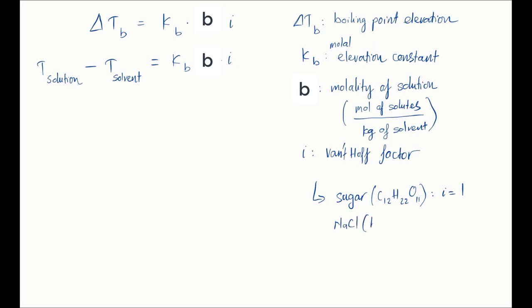Sodium chloride, however, when dissolved in water gets split into sodium cation and chlorine anion. So i equals 2. Magnesium chloride, MgCl2, when dissolved in water gets split into 3: one magnesium cation and two chlorine anions. So i equals 3.